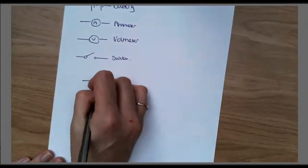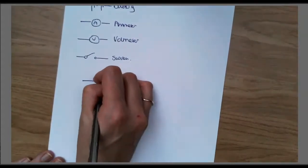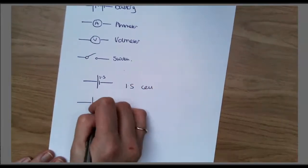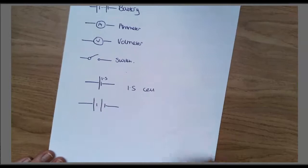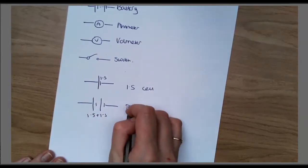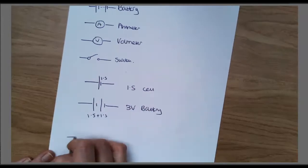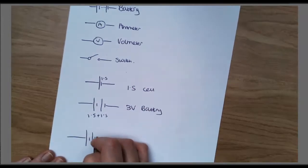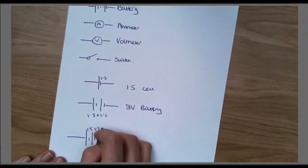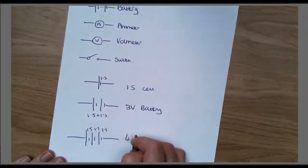If you have one cell, one cell is 1.5 volts. If I put two together, you have to add those together. So you've got 1.5 plus 1.5, that would be a 3 volt battery. If I had three, I've got 1.5, 1.5 and 1.5, which makes a 4.5 volt battery. So you're adding them together.